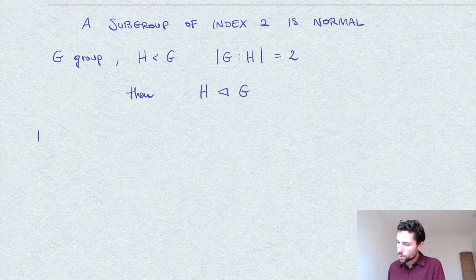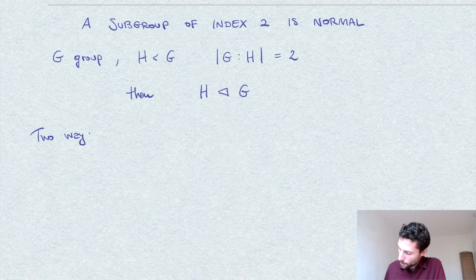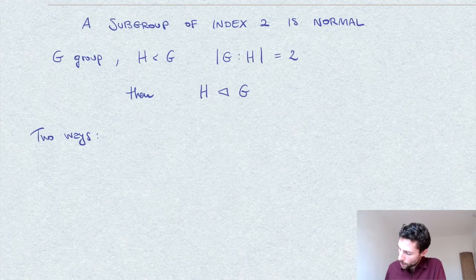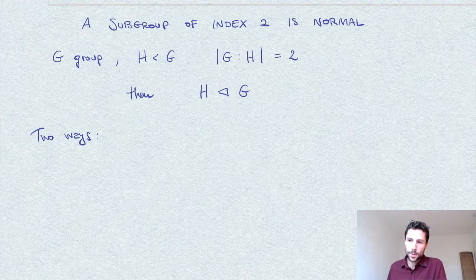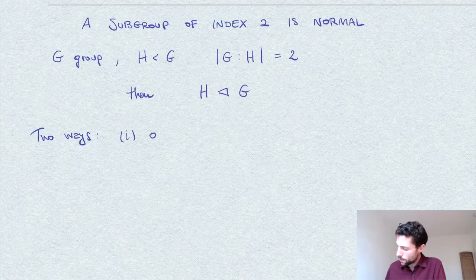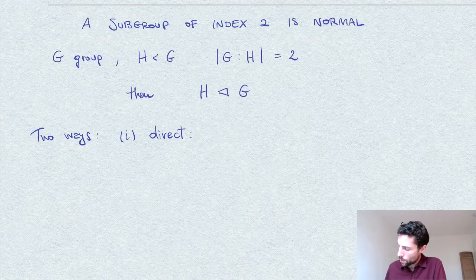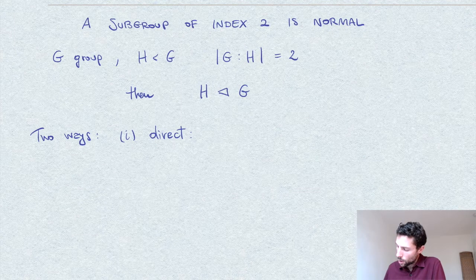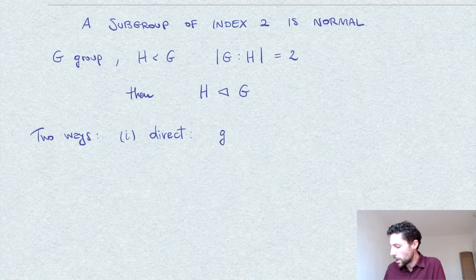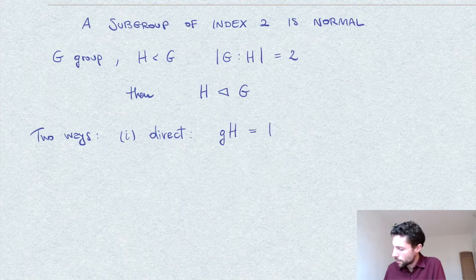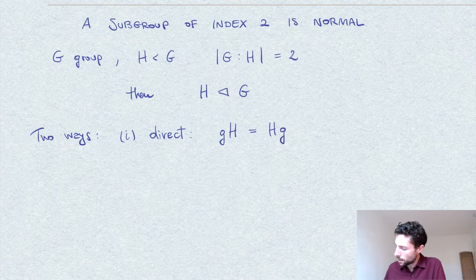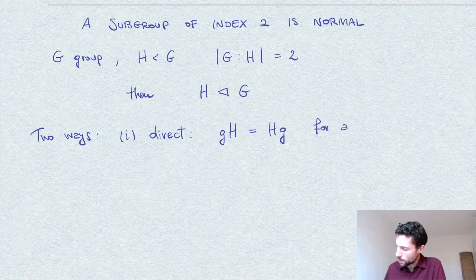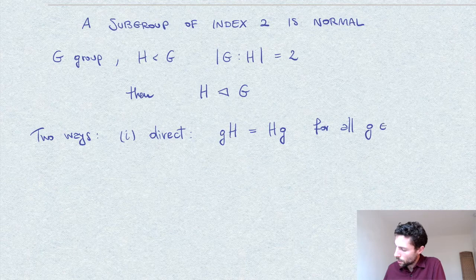Now, as I said, I want to give proof of this in two ways. One, namely, is the direct one. We just show the invariance under conjugation, so we show that the left cosets of H are the same as the right cosets for all g's.